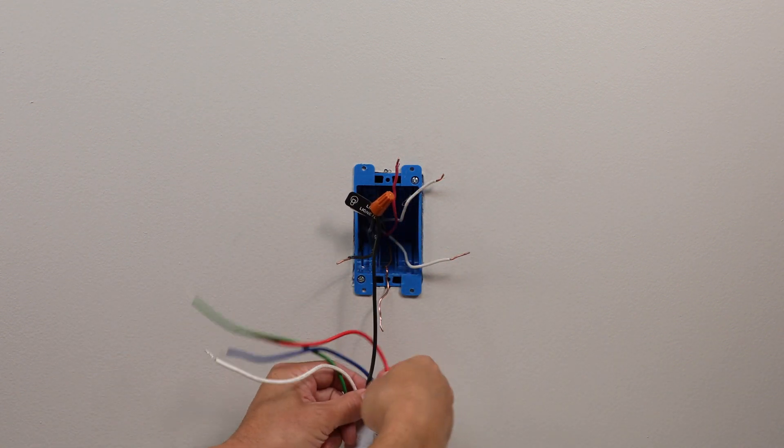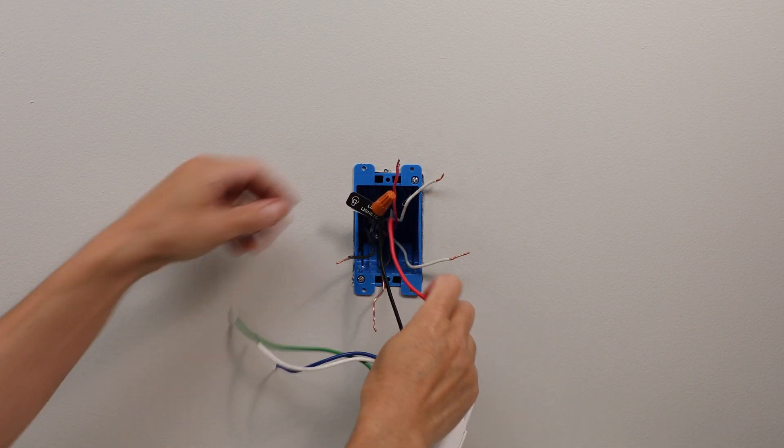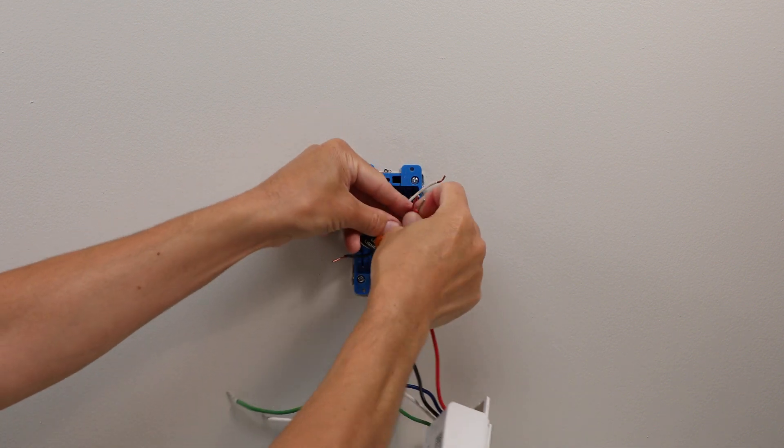Then, use a wire nut to connect the red and blue wire from the light switch to the traveler wires in the wall.